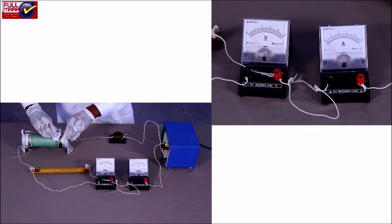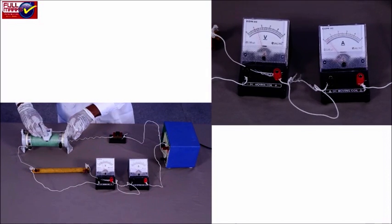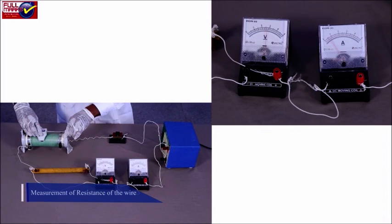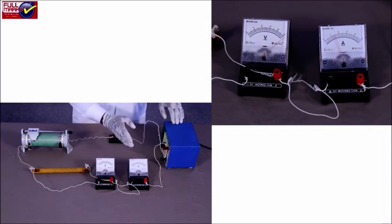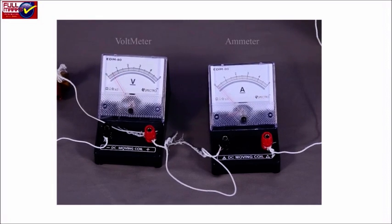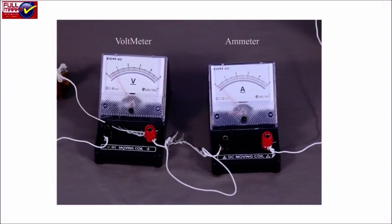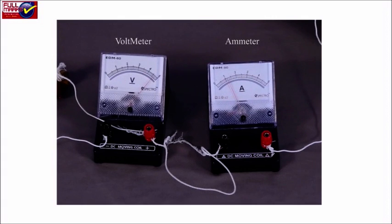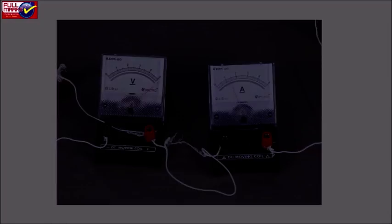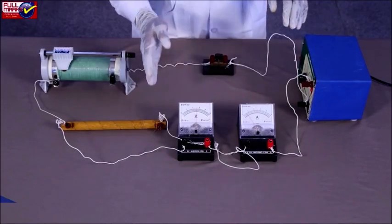Insert the plug key and check if ammeter and voltmeter are working. To determine resistance properly, slide the rheostat slider. By sliding the rheostat contact, adjust the resistance so that a measurable current passes through the resistance wire. Note down the values of potential difference and current from voltmeter and ammeter respectively. Shift the rheostat contact slightly to ensure full division readings. Avoid taking readings in fractional divisions.